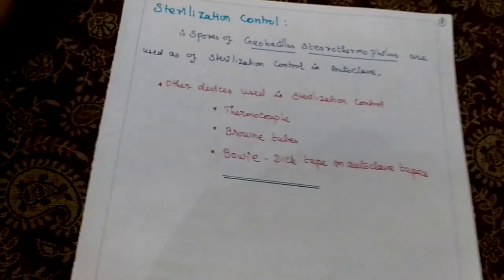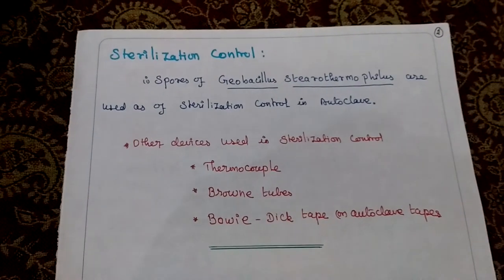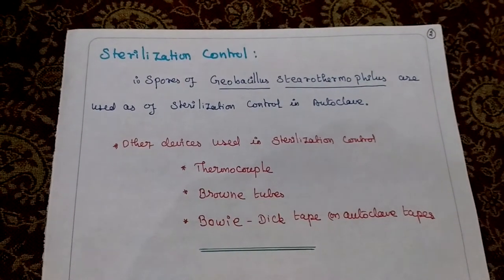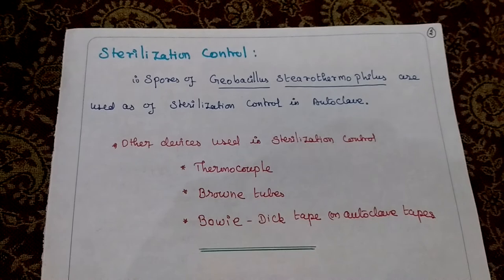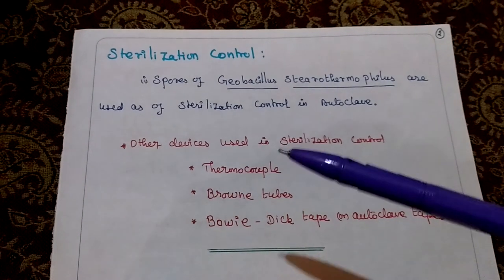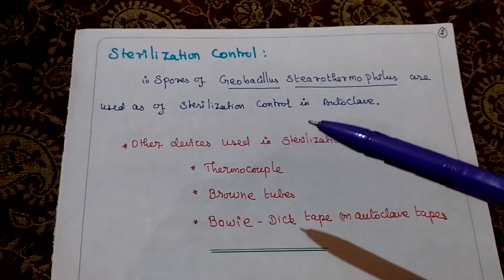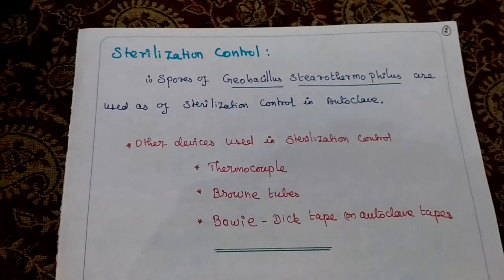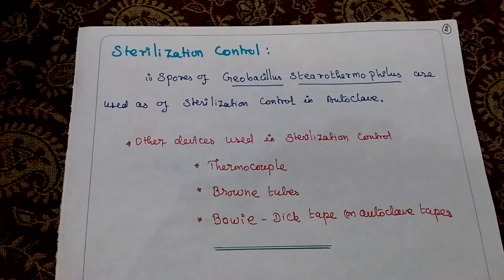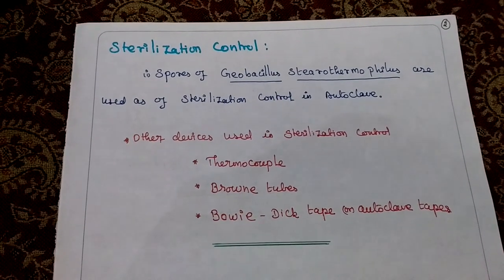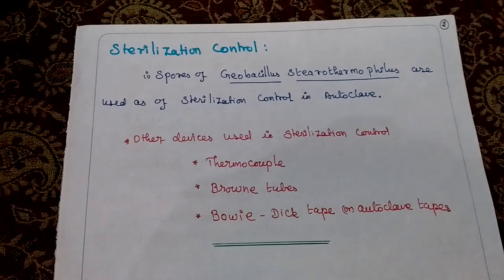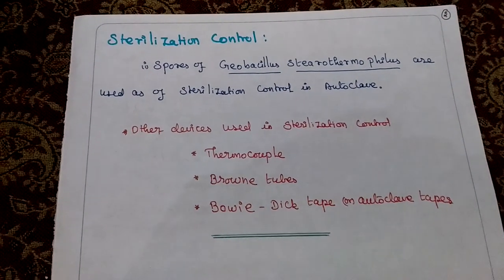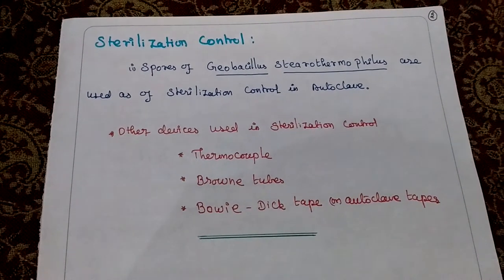Sterilization controls. Spores of Geobacillus stearothermophilus are used as sterilization controls in the autoclave. Other devices used in sterilization control include the thermocouple, brownie tube, and biotic tape or autoclave tape.